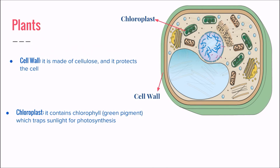Plant cells have the same organelles but they don't usually have lysosomes. They have two additional organelles. They have the cell wall which protects the plant and is made of cellulose. Cell walls in different organisms are made from different substances — the cell wall in a bacterium is made up of peptidoglycan, while the cell wall in a fungus is made up of chitin. Chloroplasts are where photosynthesis happens; they contain chlorophyll which traps sunlight.